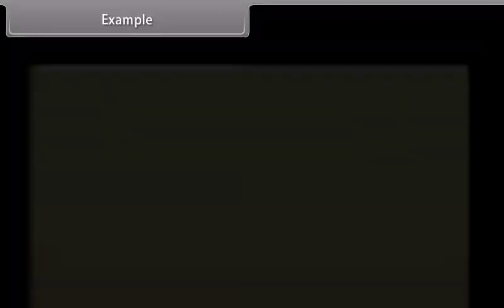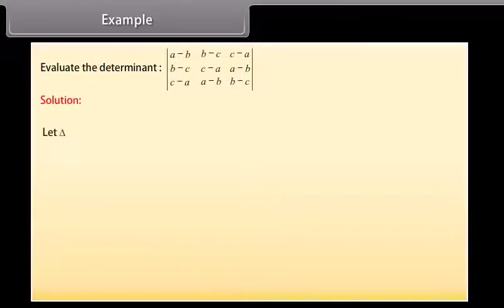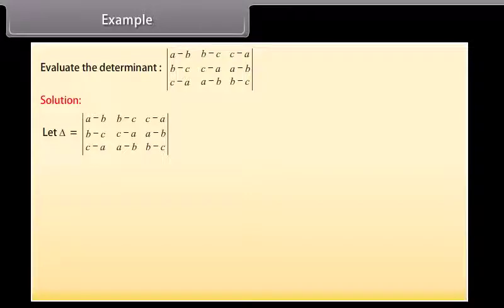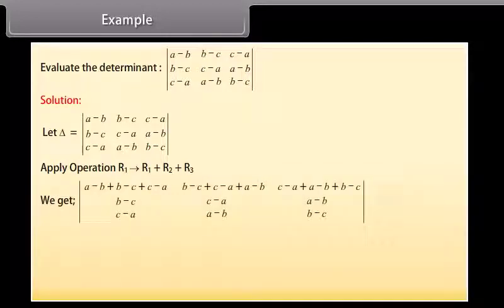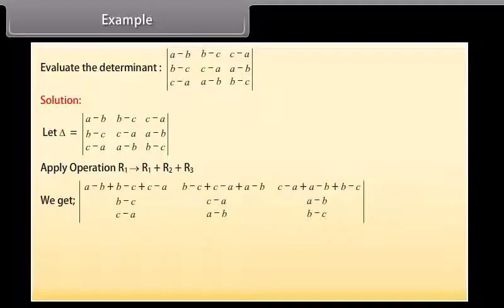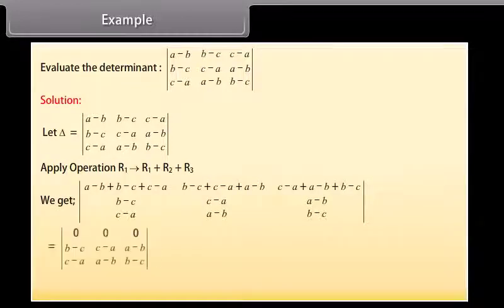Example: Evaluate the determinant. Solution: Let Δ = the determinant. Apply the row operation R1 → R1 + R2 + R3. We get all the elements of one row becoming 0, so the value of the determinant equals 0.